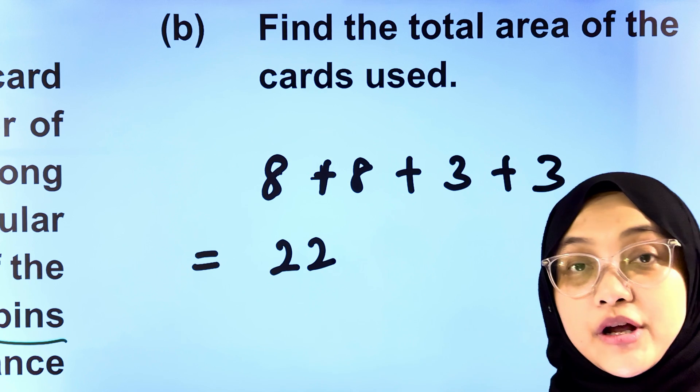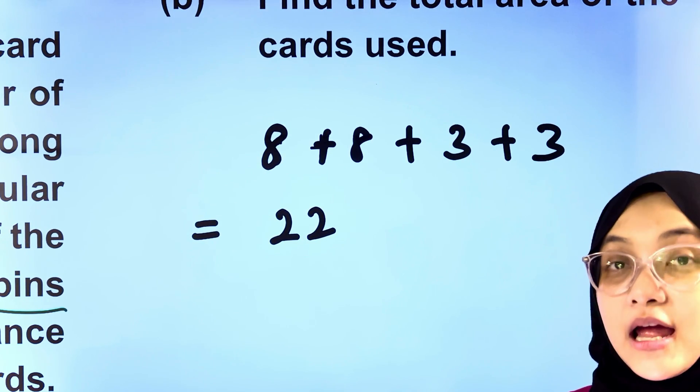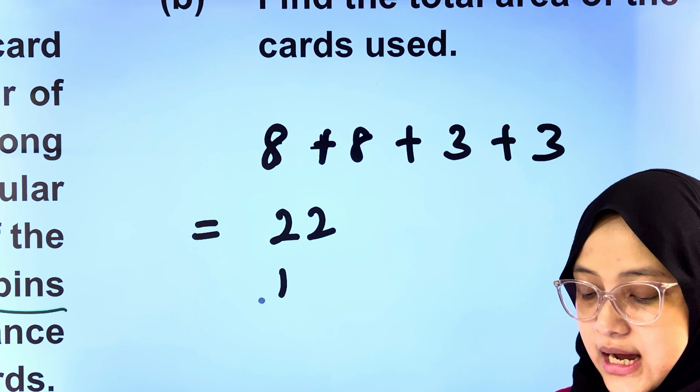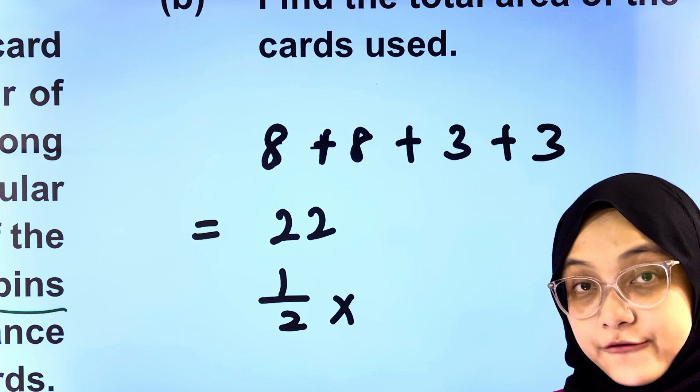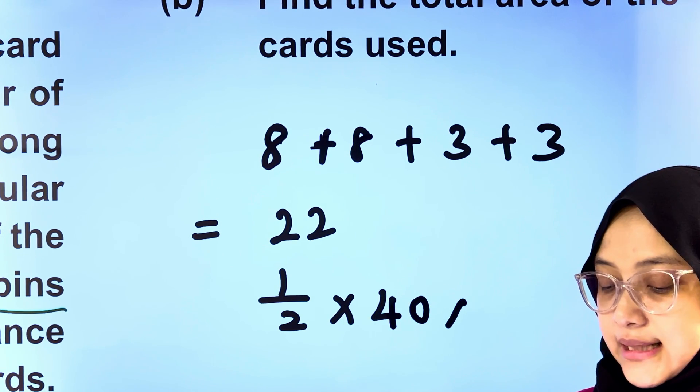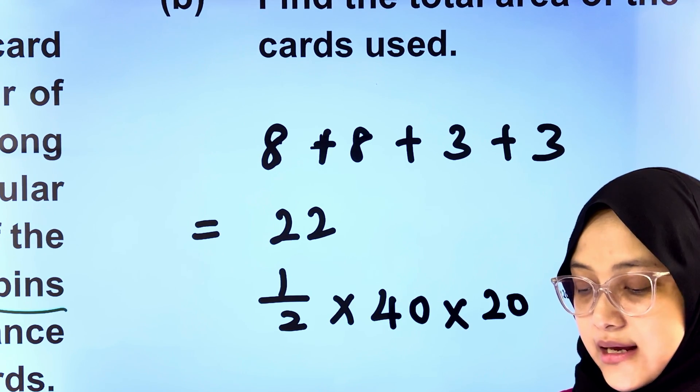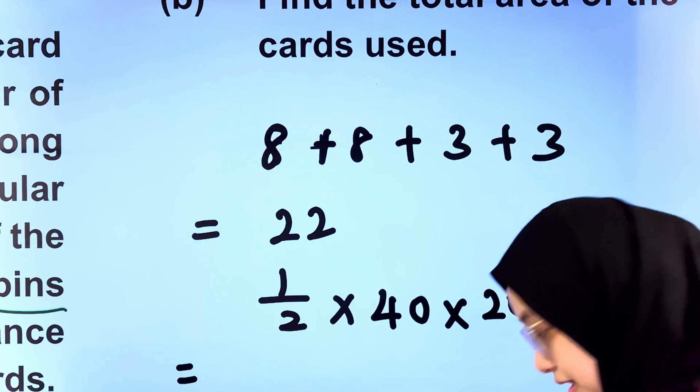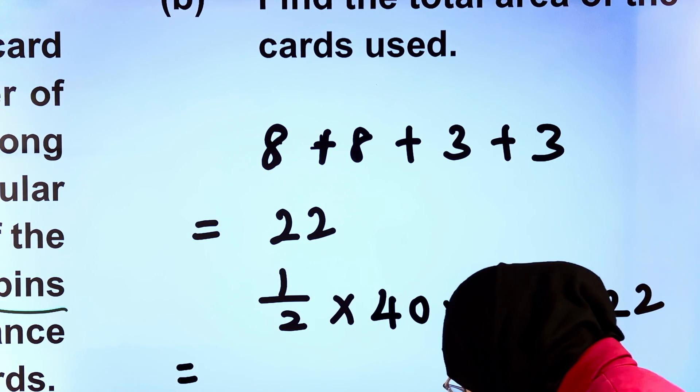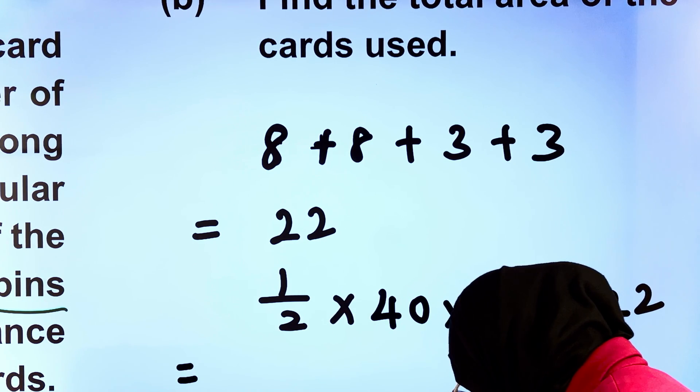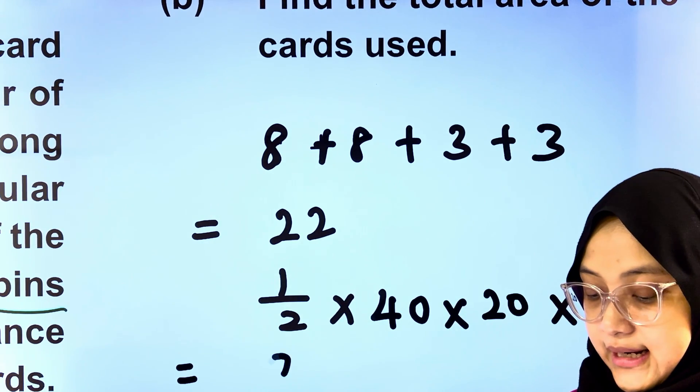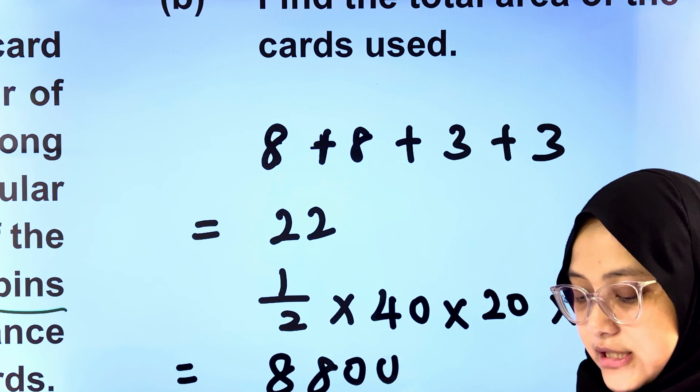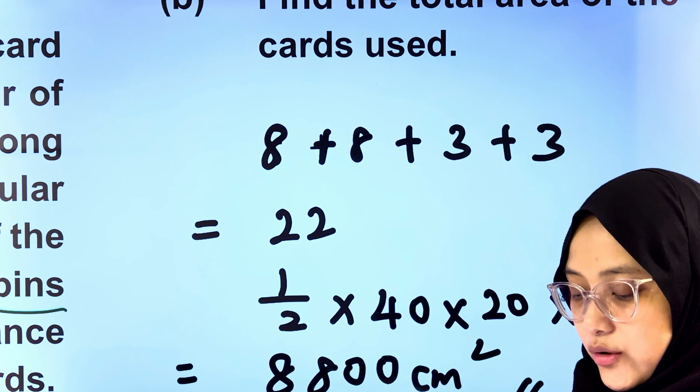Therefore, the total area of the cuts used, apply the formula of area of triangle: half times the base of the triangle, 40, times the height, which is 20, multiplied by 22 cuts. Key this into the calculator. You should get 8,800 square cm in total area.